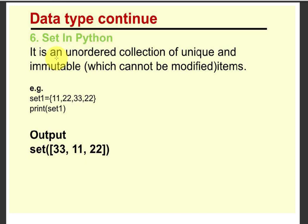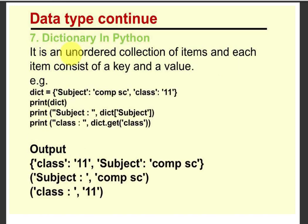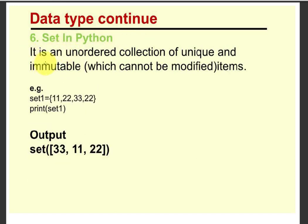Next, see the last — set in Python. It is an unordered collection of unique and immutable items which cannot be modified. You can create sets with the help of curly brackets. Set values also cannot be modified. That is the way of using sets.